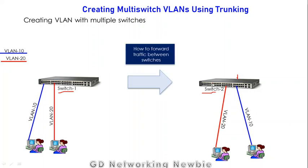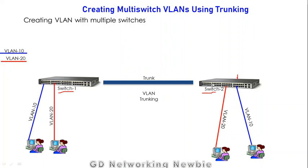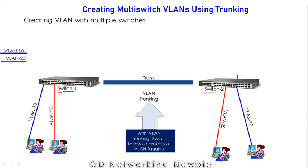If a user of VLAN 10 wants to send something to its other members, that frame has to travel from one switch to the other. So the question is how to forward traffic between multiple switches, and the solution is trunking or VLAN trunking. With VLAN trunking we can transmit frames from one switch to another.